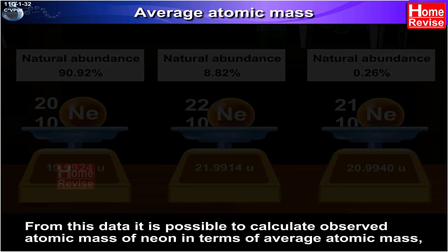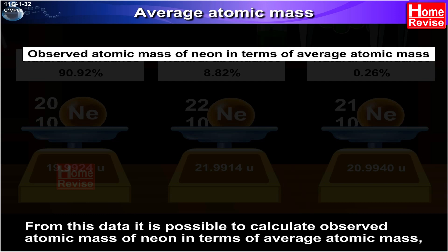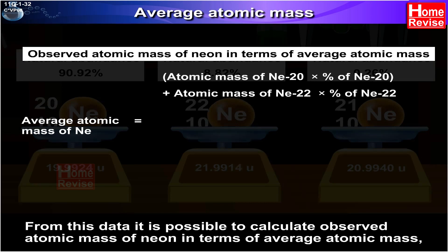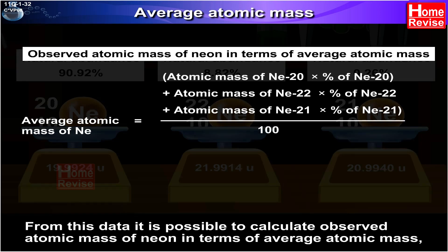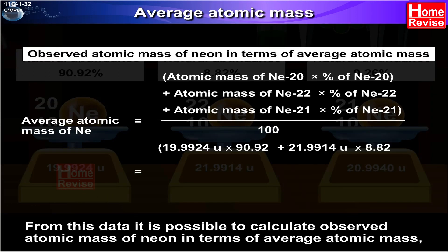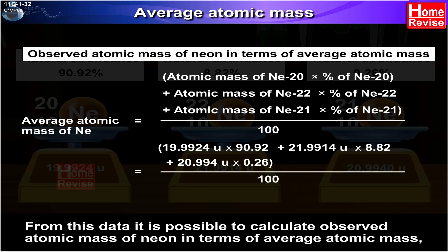From this data, it is possible to calculate the observed atomic mass of neon in terms of average atomic mass. Average atomic mass of Ne = (atomic mass of Ne-20 × % of Ne-20 + atomic mass of Ne-22 × % of Ne-22 + atomic mass of Ne-21 × % of Ne-21) / 100 = (19.992 × 90.92 + 21.991 × 8.82 + 20.994 × 0.26) / 100 = 20.1707 u.